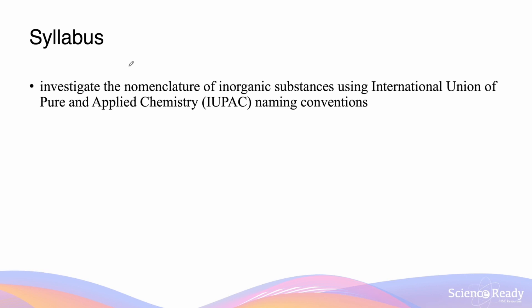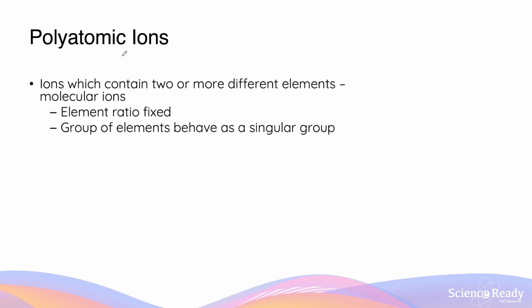This video is on polyatomic ions. Polyatomic ions are molecules that are charged, either positive or negative, and contain atoms from two or more different elements. Because a polyatomic ion is also known as a molecular ion, the ratio of atoms of different elements in the ion is always fixed. This group of elements will always behave as a singular molecule or group, rather than separate elements.